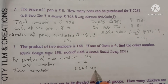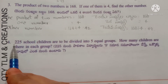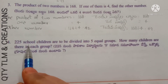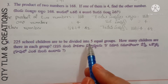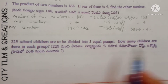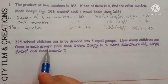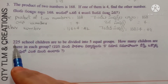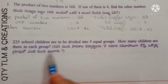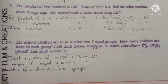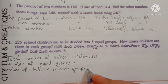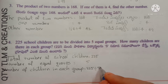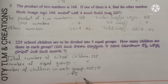Next question: 225 school children are to be divided into 5 equal groups. How many children are there in each group? Total number of school children = 225. Number of equal groups = 5. Number of children in each group = 225 divided by 5 = 45 children.